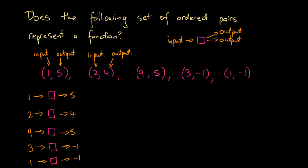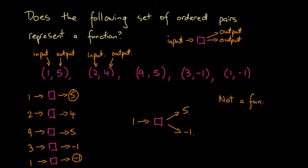However, what we noted at the beginning is that the pair (1, 5) says if we input 1, the output is 5. But now we have a different rule: (1, -1) says if we input 1, the output is -1. Essentially, the input 1 is associated with both 5 and -1 — two different outputs for a single input. Because it assigns two different outputs to this single input, this cannot be a function. A function must associate each and every input with just one output, and here we found an input with two outputs, so this set of ordered pairs violates that definition and is not a function.